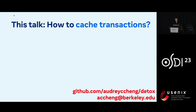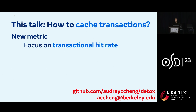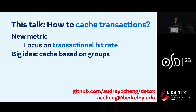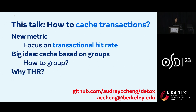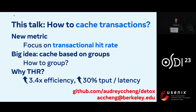In summary, I've covered how we should optimize caching for transactions. First, by introducing a new metric, transactional hit rate, that allows us to precisely measure when caching is actually helping latency for these types of requests. Then I've introduced our novel system Detox, which caches based on groups of keys that are accessed together and optimizes for transactional hit rate. We've shown that by increasing transactional hit rate, we're able to see significant performance improvements on a range of different workloads. Thank you.